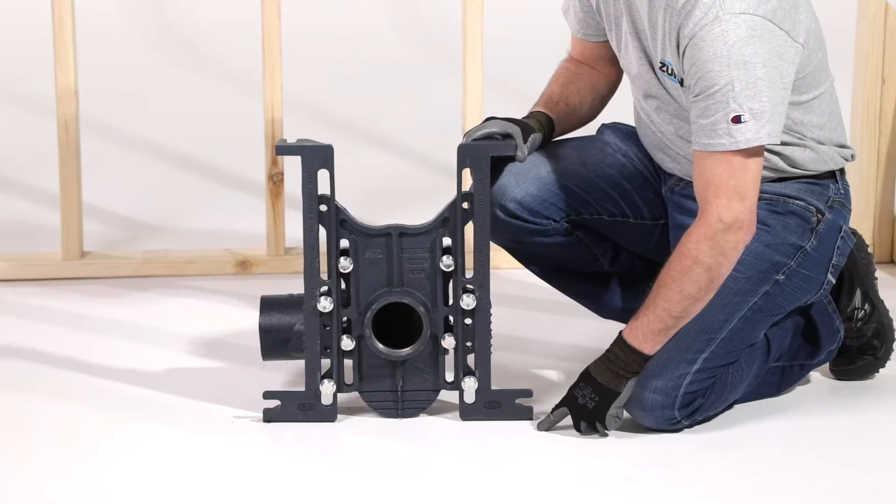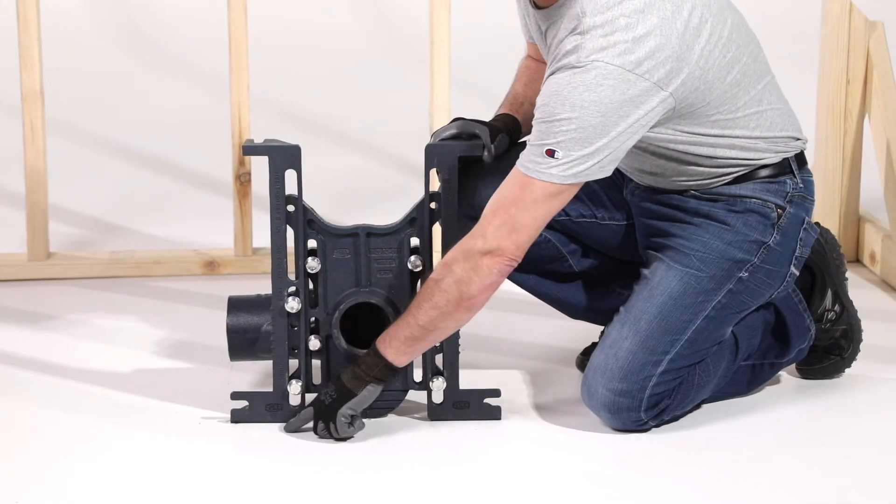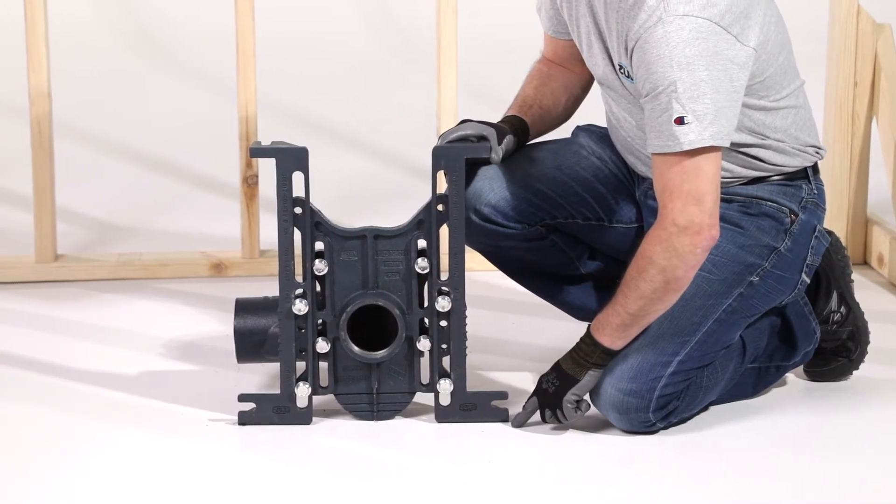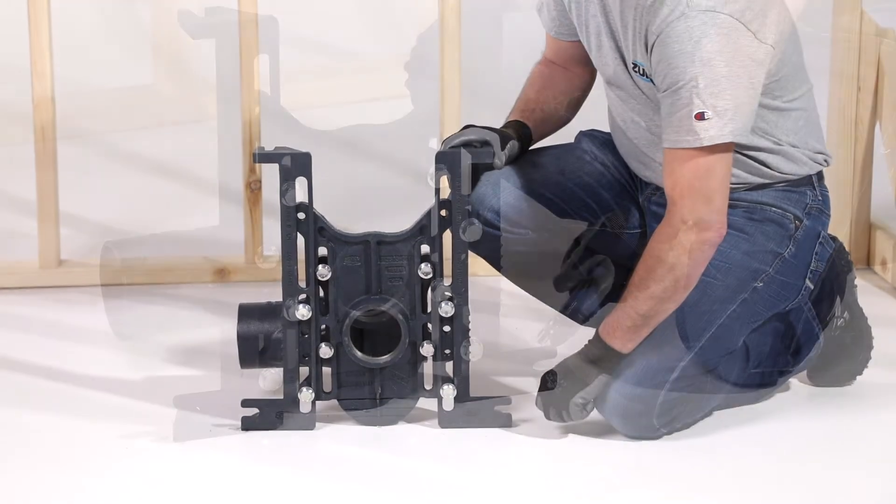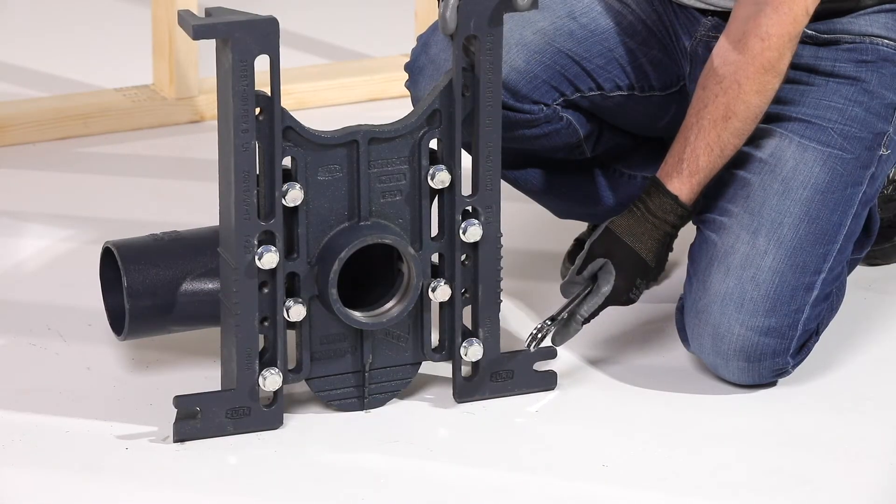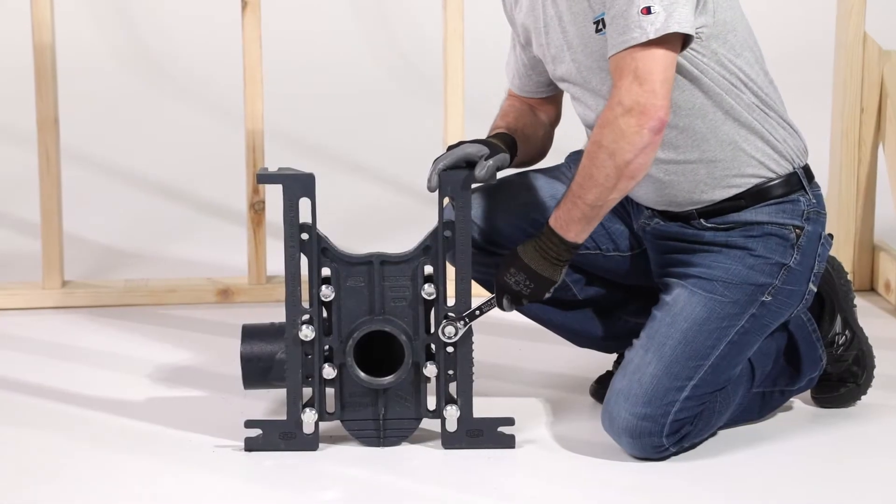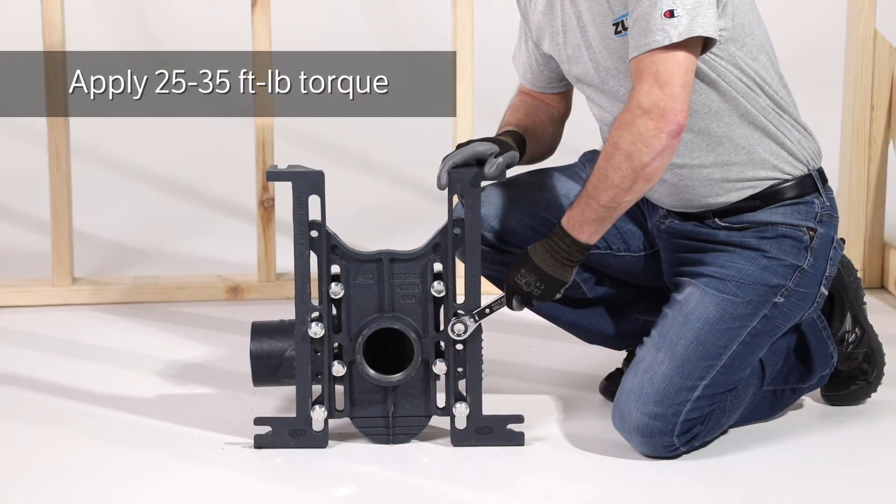Make sure to keep the feet parallel and tack on height to your adjustment if tilting is necessary during installation. Once height is determined, secure the two holes furthest on the feet. Using a torque wrench, apply between 25 and 35 foot-pounds of torque.